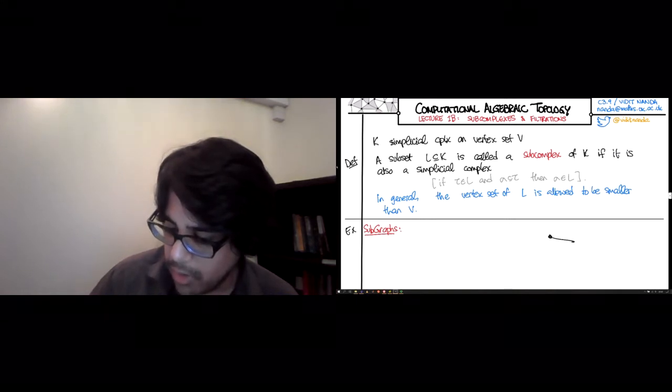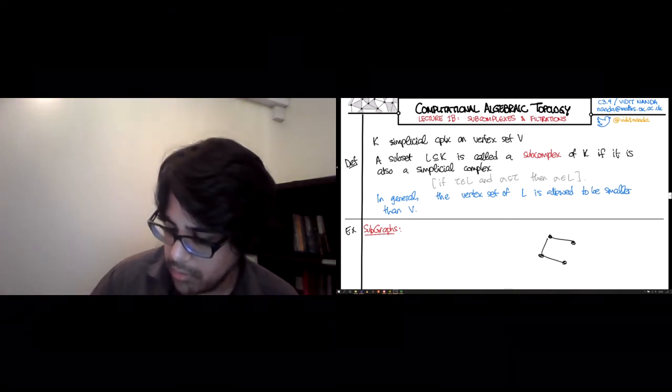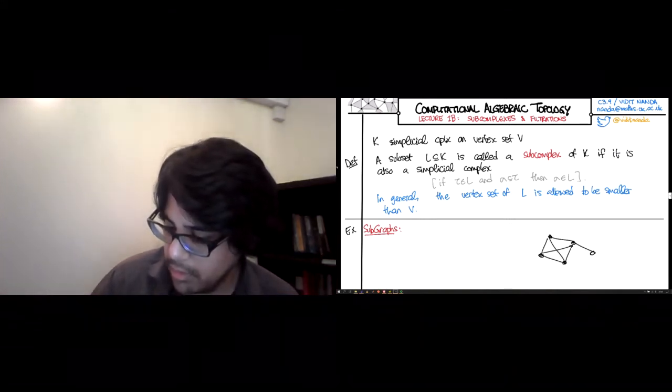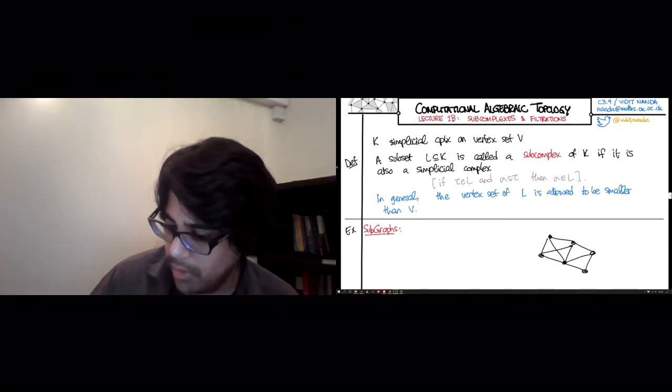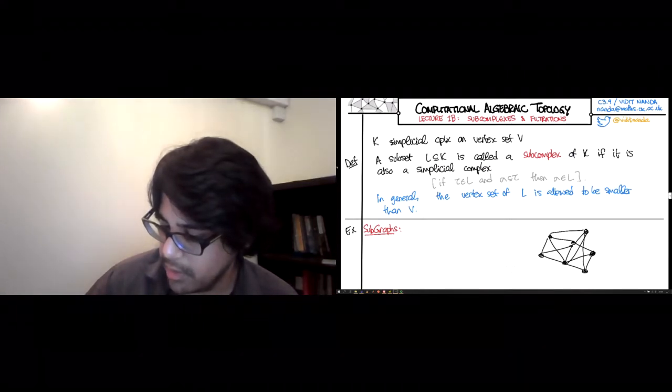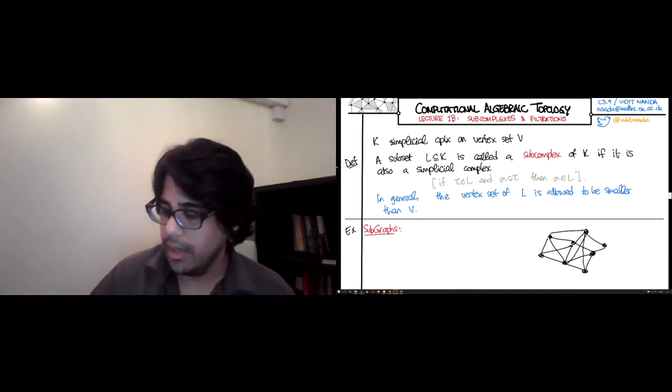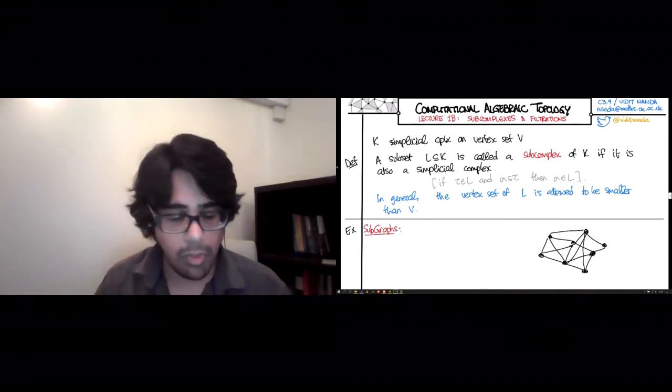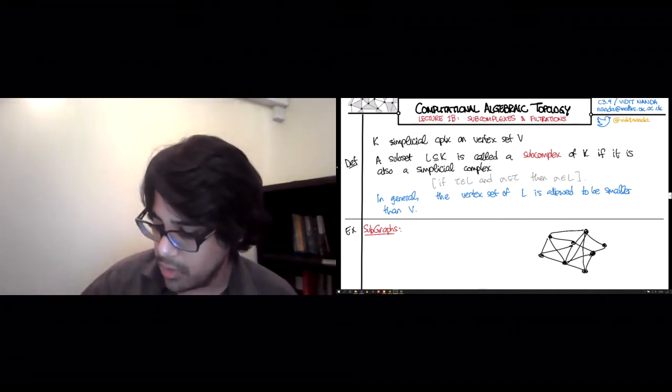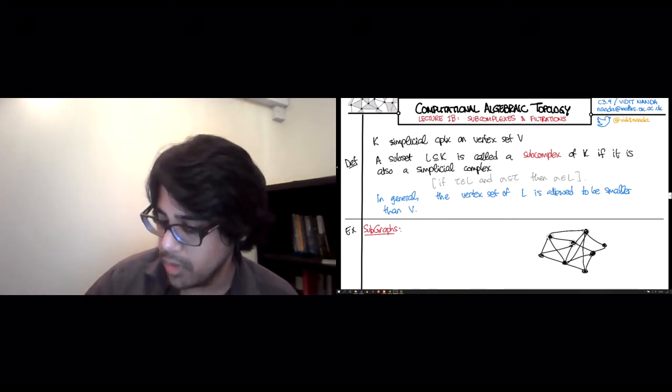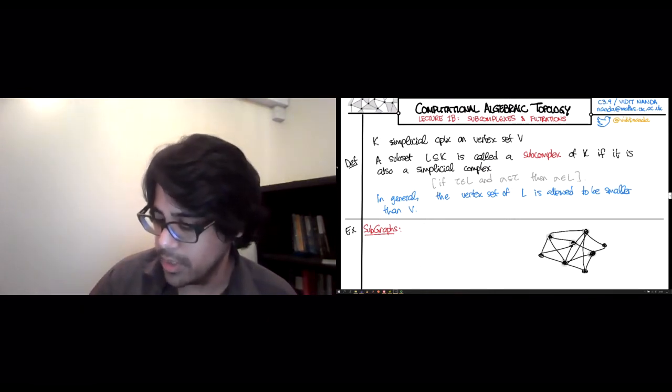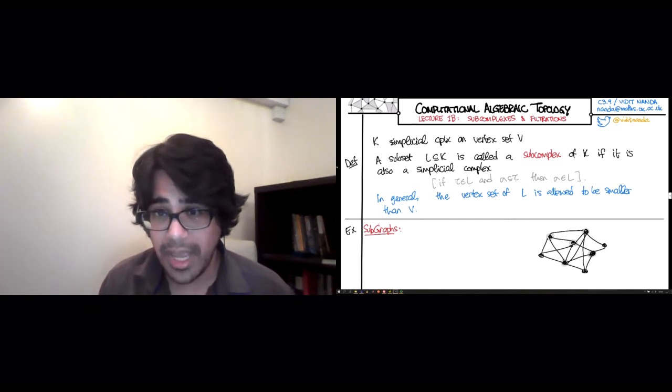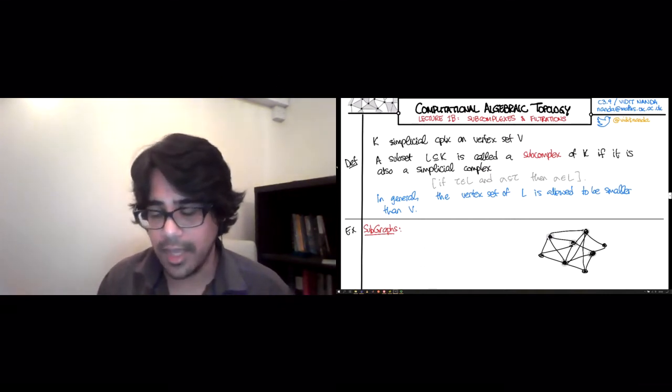So here I will draw a fairly non-trivial graph, maybe with some funny edges there. And now you take any graph that lives inside. What do I mean by a graph that lives inside? You're allowed to include any vertex you want. So maybe I include these. But the minute you include an edge, you must include all the vertices, the two vertices that touch that edge.